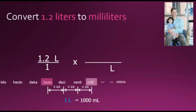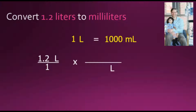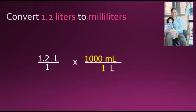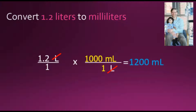Taking this equivalent value, we express it as a conversion factor fraction: 1 liter goes in the denominator and 1000 milliliters goes in the numerator, resulting in a fraction with a value of 1. Canceling out the common factor of liters, then multiplying numerators — 1.2 times 1000 — gives us 1200, and the denominators multiply to give 1. Dividing by 1 does not change the value, so our final answer is 1200 milliliters.